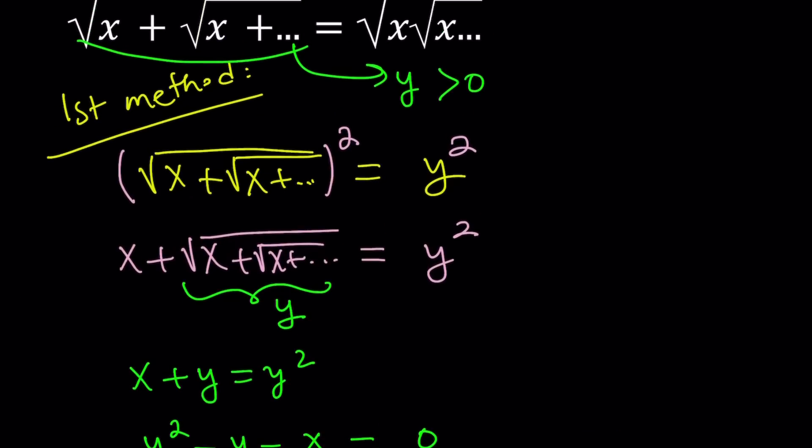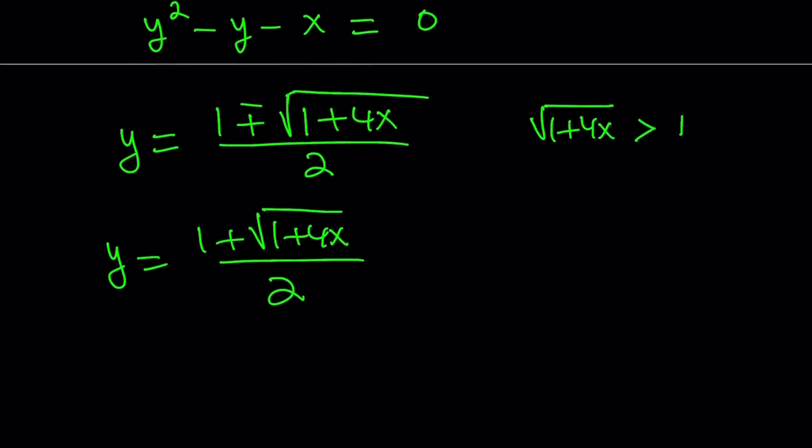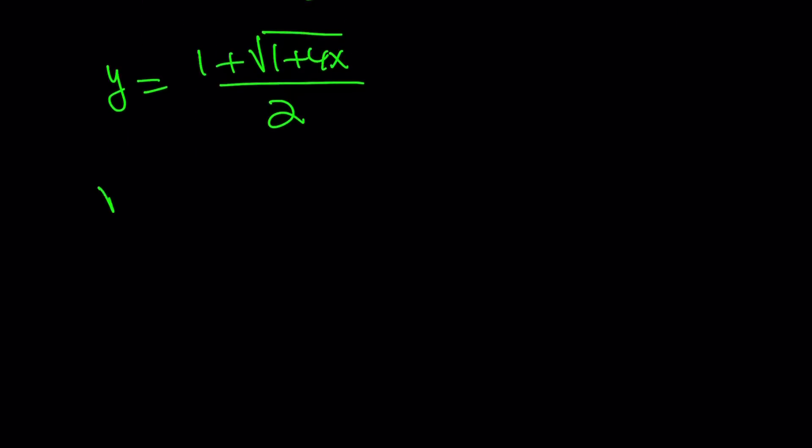That gives us a single solution for y. So that's good, because the left-hand side now I have in terms of x, so I can set it equal to the right-hand side. The right-hand side of my original equation is square root of x times the square root of x times the square root of x dot dot dot. And now this is equal to 1 plus the square root of 1 plus 4x divided by 2, which is the same as y.